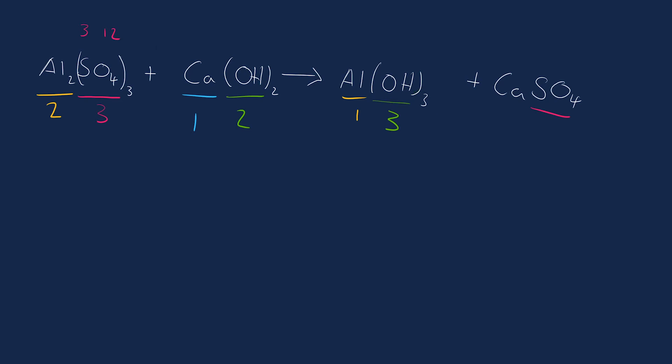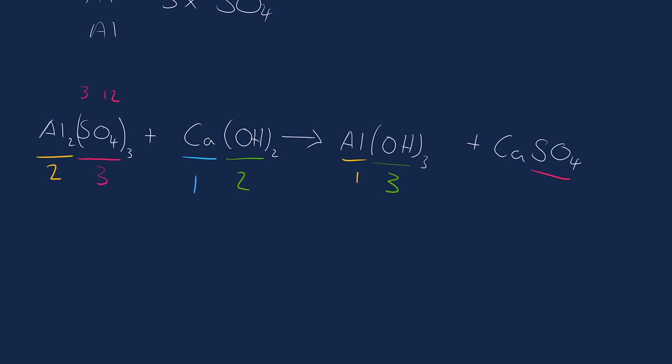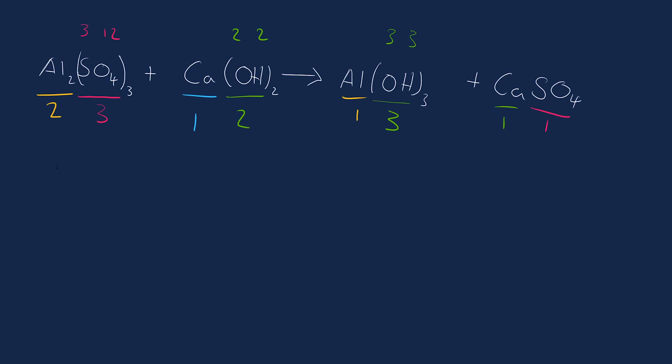If you wanted to just be extra thorough, you could say we have two oxygen, two hydrogen, three oxygen, three hydrogen here, and one calcium, and that's one sulfate group. So we've counted up how much of everything we have.